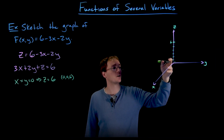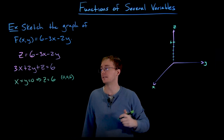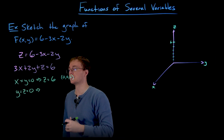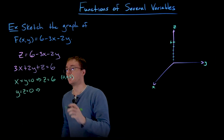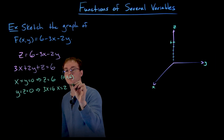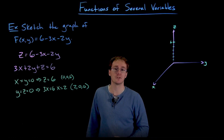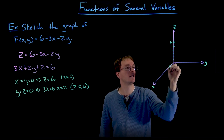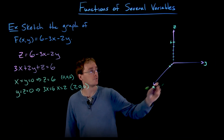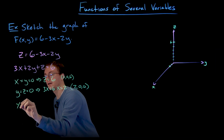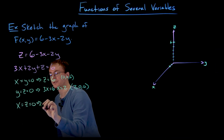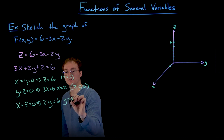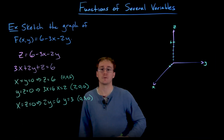Now let's find the x-intercept. If we want to be on the x-axis, z and y both have to equal zero. Setting y and z equal to zero, our equation reduces to 3x equals 6, which tells us x equals 2. So another point on our plane is (2, 0, 0). To get our third point, we find the y-intercept: setting x and z equal to zero, our equation becomes 2y equals 6, giving us y equals 3 and the point (0, 3, 0).